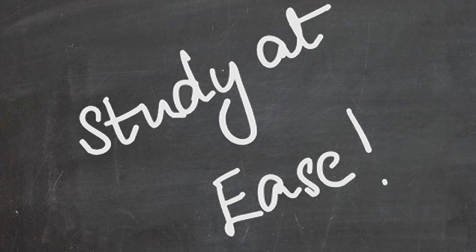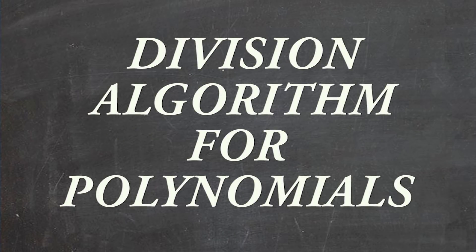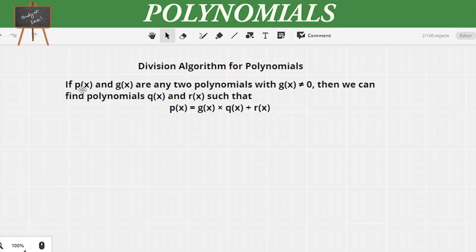Hello everyone, welcome to my channel Study at Ease. Today we are going to look at the division algorithm of polynomials. It states that if P(x) and G(x) are any two polynomials with G(x) not equal to 0, then we can find polynomials Q(x) and R(x) such that P(x) = G(x) × Q(x) + R(x). This is nothing but: dividend = divisor × quotient + remainder.